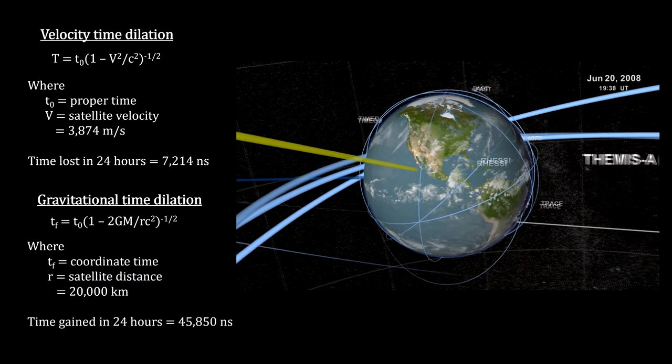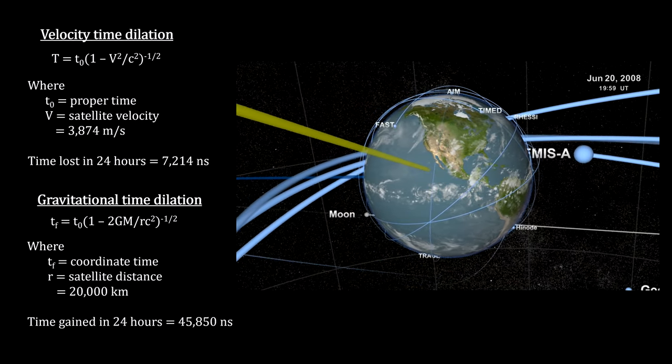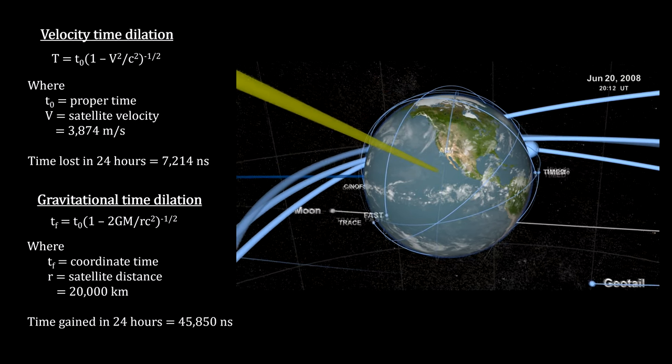The accuracy of our GPS system is strong evidence for the correctness of general relativity.